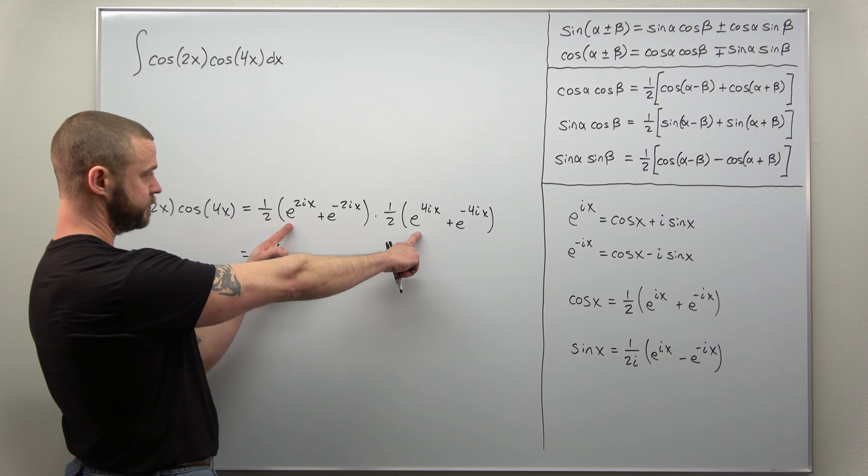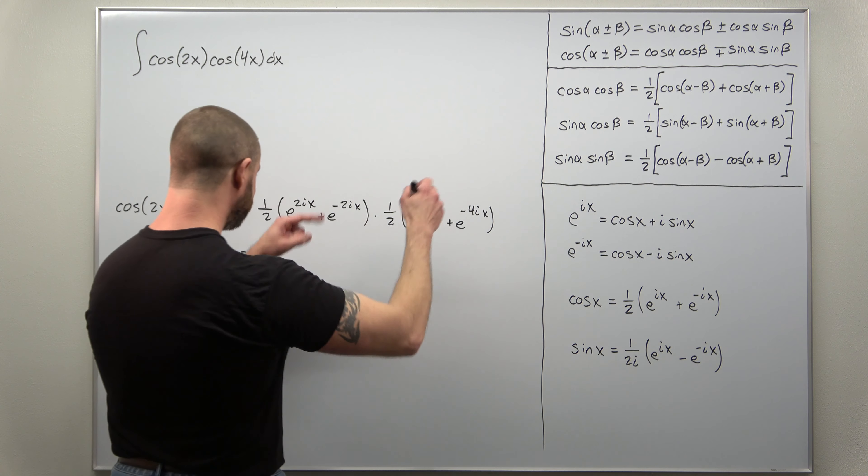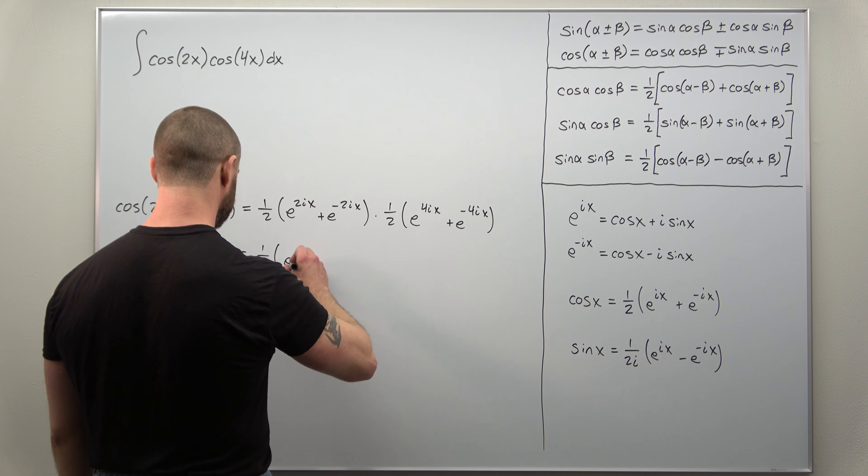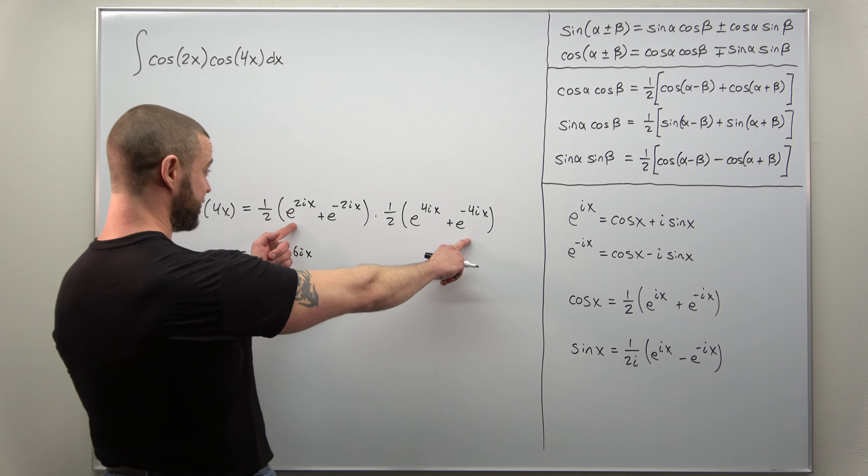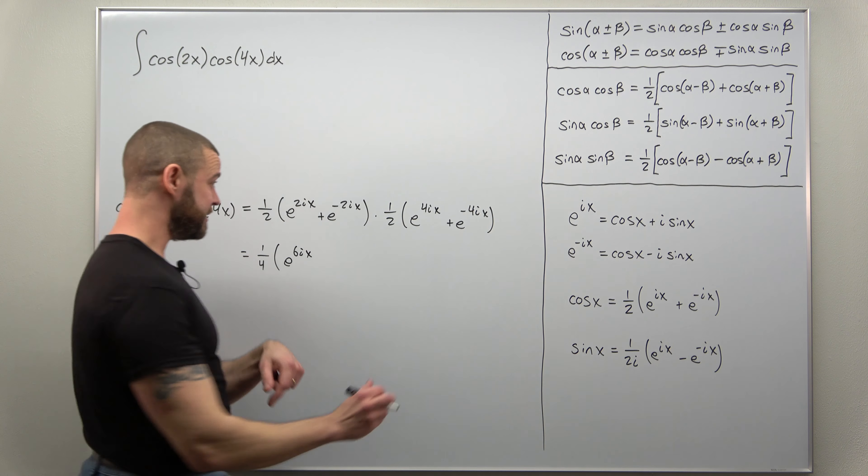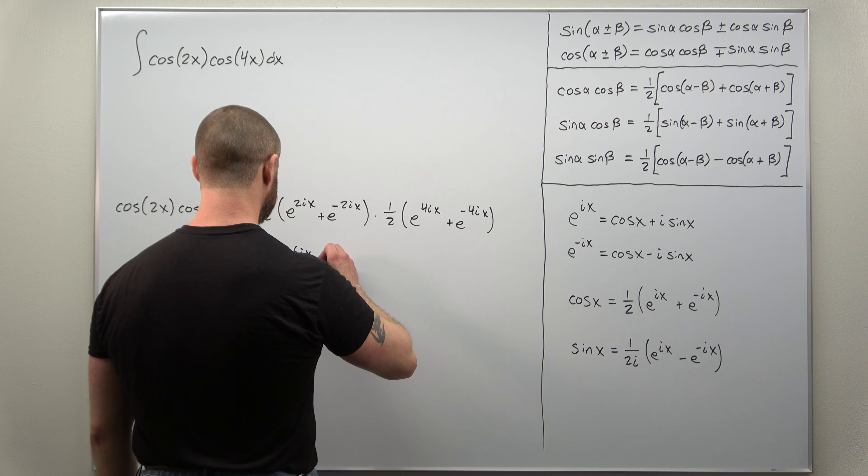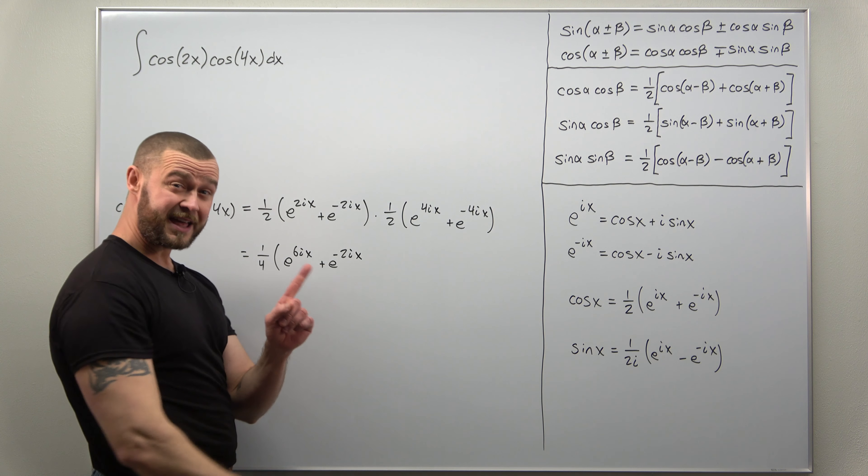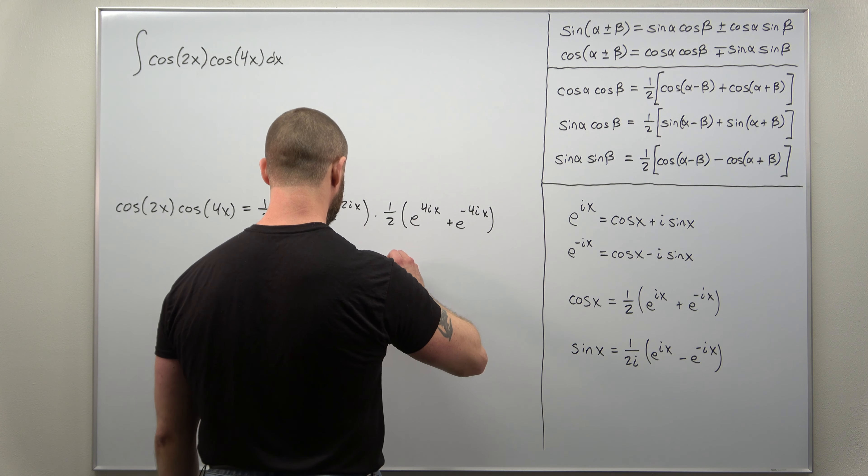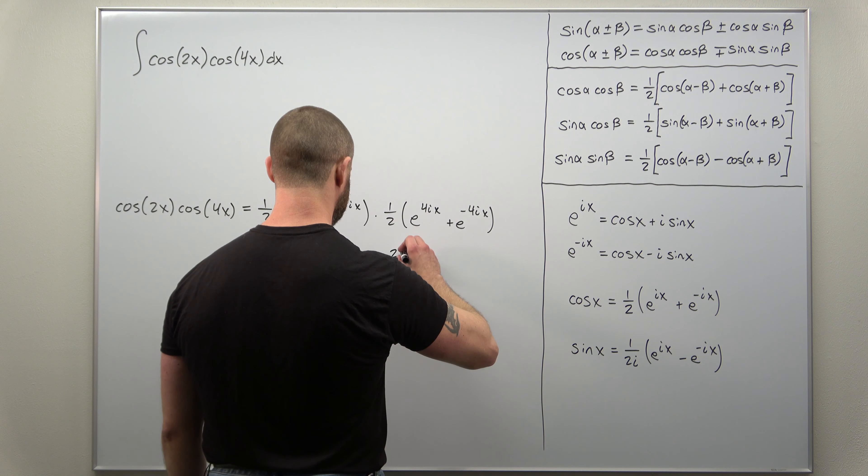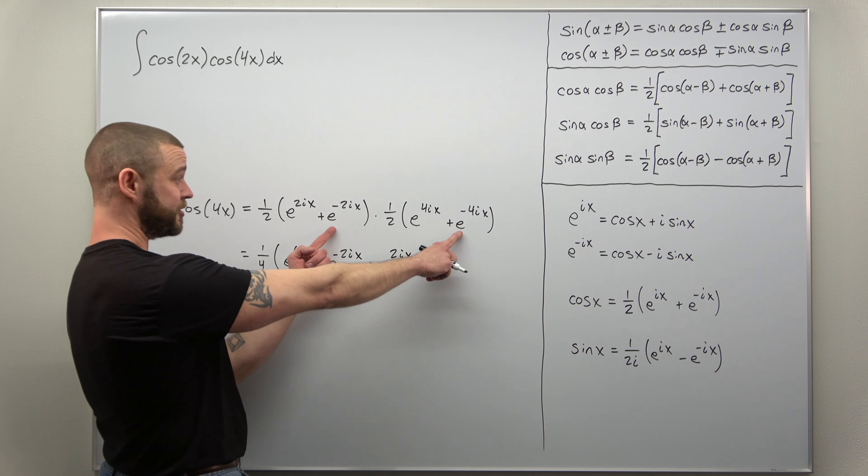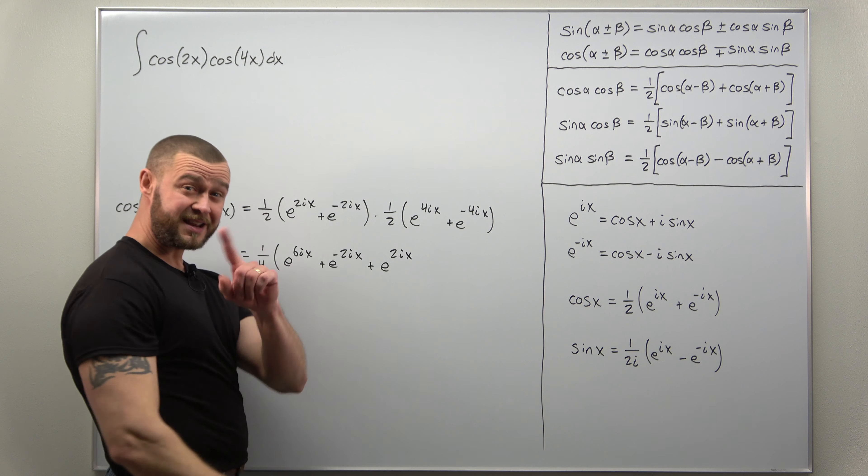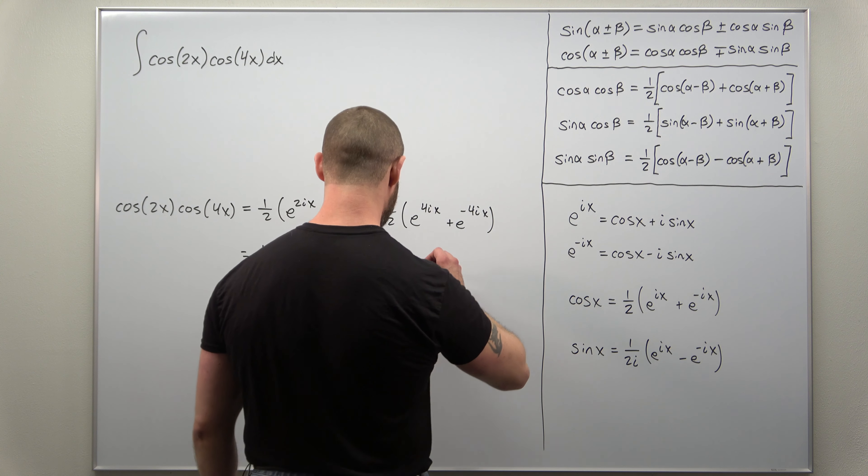If we go ahead and multiply here, we'll get e to the 6ix. Your last term looks like it's going to come out to e to the negative 2ix. Your inner terms here look like you're going to get e to the positive 2ix, and then your last term looks like you'll get e to the negative 6ix.